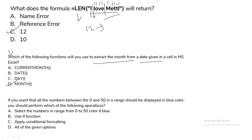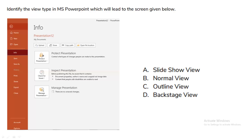The next question is: if you want all numbers between 0 and 50 in a range to be displayed in blue color, what operation will you perform? You can select the numbers and color them blue, or use an IF function, or apply conditional formatting. All of the given options are true for this question.